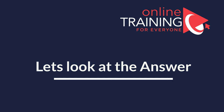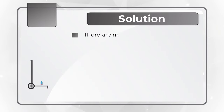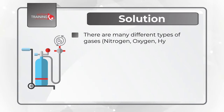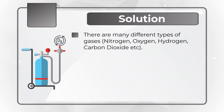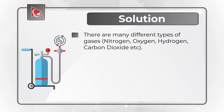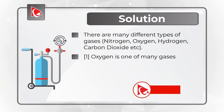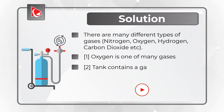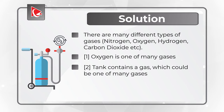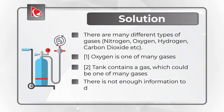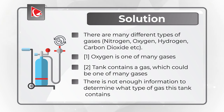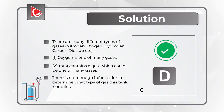The question is worded very tricky, but the answer is obvious. There are many different types of gases — nitrogen, oxygen, hydrogen, carbon dioxide, and many others. Oxygen is just one of many gases, as indicated in statement 1. The tank contains a gas which could be any of many gases, as shown in statement 2. Based on this, there is not enough information to determine what type of gas is in the tank. The correct choice is D: cannot determine.